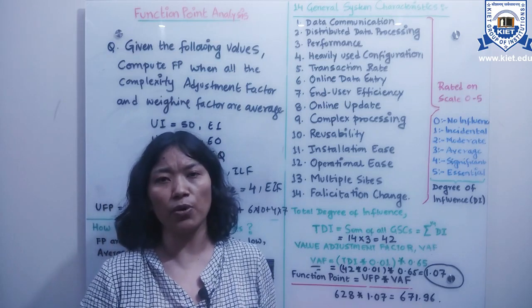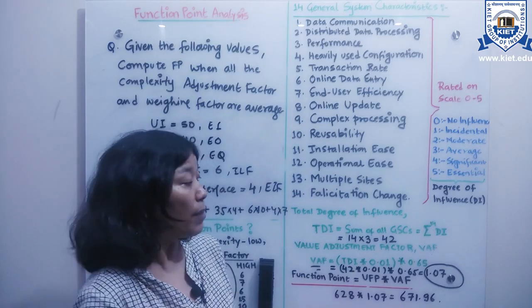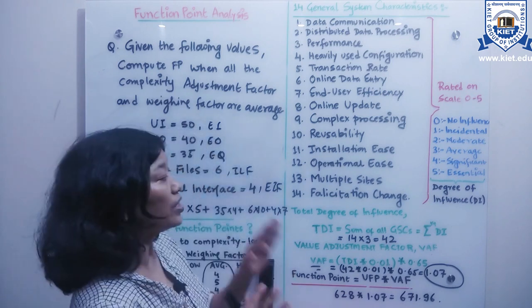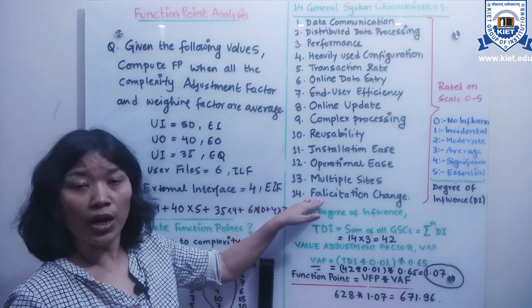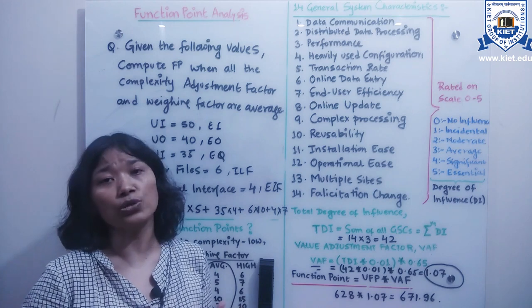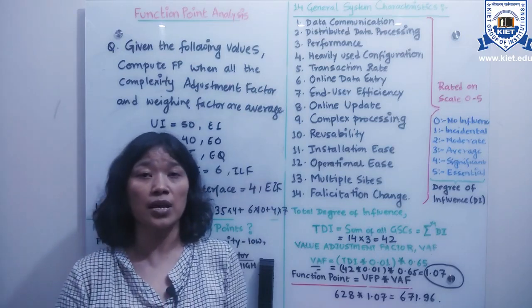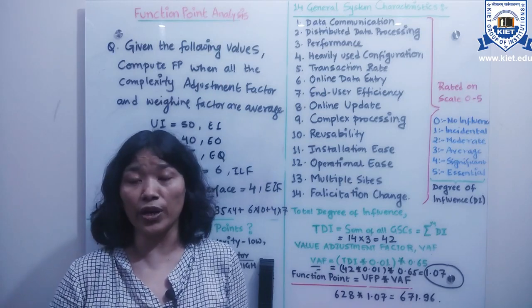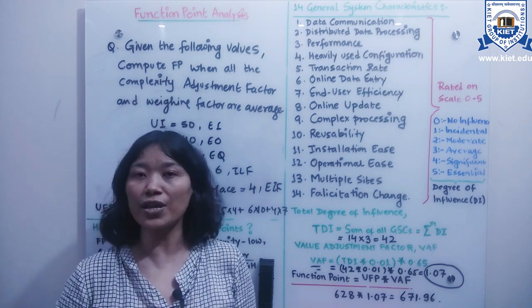That is the simple multiplication process. You don't need a calculator for this question. Don't get confused by the 14 characteristics — you don't need to memorize all of them. You just need to know the weighing factors, and in most questions weighing factors are given. I hope you understand today's topic on function point analysis, a very interesting topic in software metrics. If you have any queries, write in the comment box. Thank you, students — keep watching and learning.